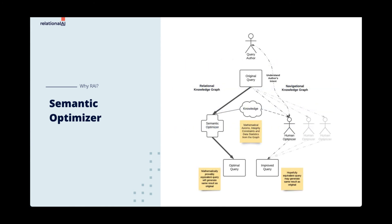Navigational graph databases may have cost-based optimizers, which simply choose the best execution plan for the query written by the author. So navigational graph databases require that either your query authors are graph experts, or that you have one or more human optimizers ensuring that the domain experts are getting the performance and results they need.